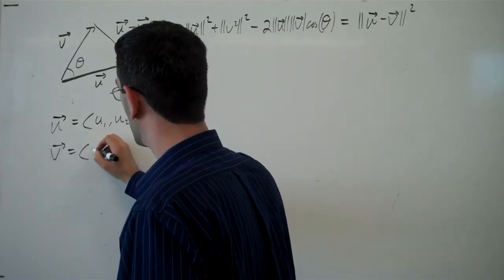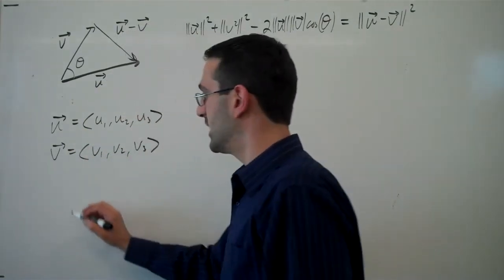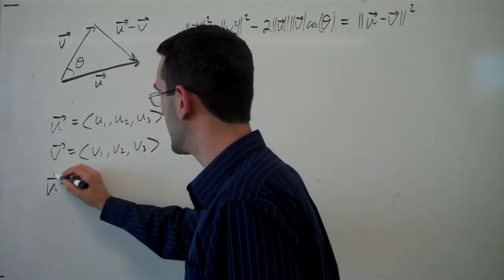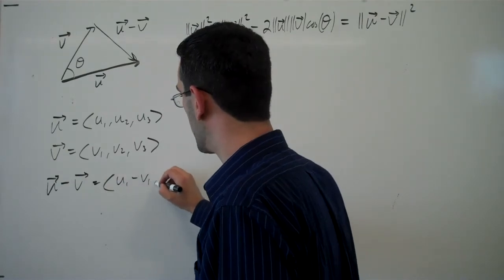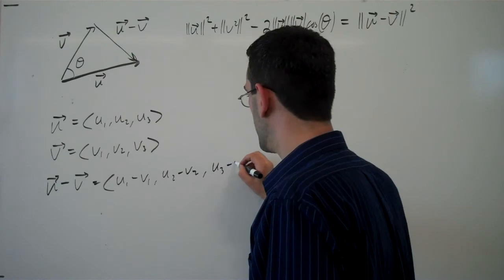The vector v would be v1, v2, v3. And then u minus v would be u1 minus v1, u2 minus v2, and u3 minus v3.